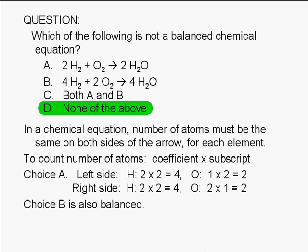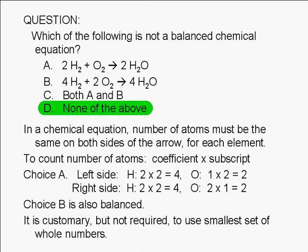One thing you should realize from this question is that there is an infinite number of ways of balancing a chemical equation. Coefficients in a balanced equation are just relative numbers. It is, however, customary to use the smallest set of whole number coefficients, but it is not required.